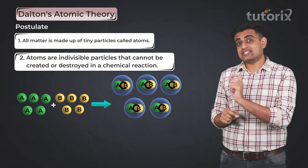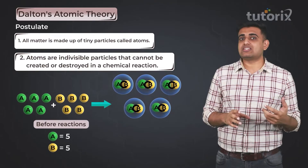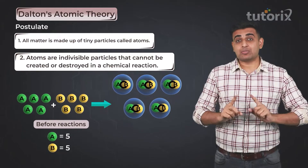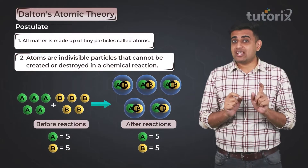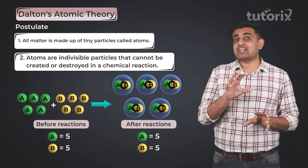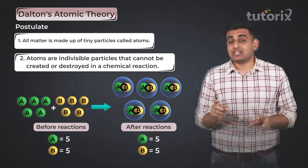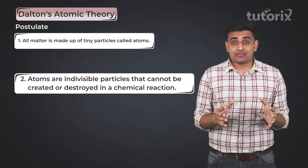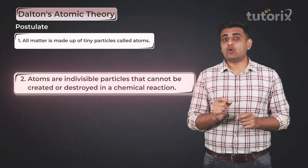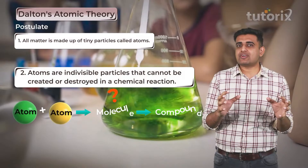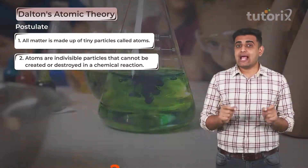If you observe, the number of atoms before the reaction is equal to the number of atoms after the reaction. Five atoms of A are present initially, and five atoms of A are also present after the reaction. Therefore, this postulate plays a key role in explaining how different atoms combine to form compounds.